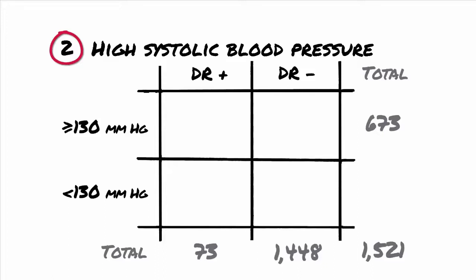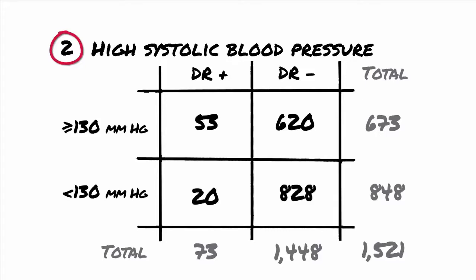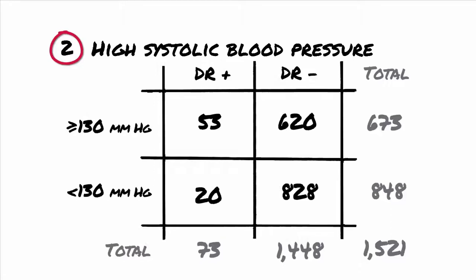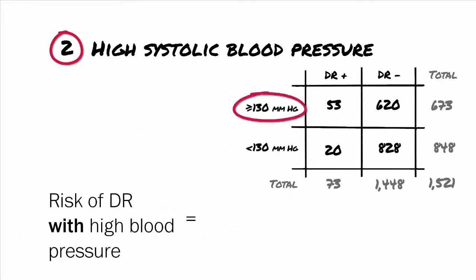673 participants in the study had high blood pressure; 53 of these developed DR and 620 did not. 848 did not have high blood pressure; 20 of these participants developed DR and 828 did not. To get the risk of DR in participants with high blood pressure, that's the exposed population, we divide 53, the number of participants with DR and high blood pressure, by 673, the total number with high blood pressure. This equals 0.079.